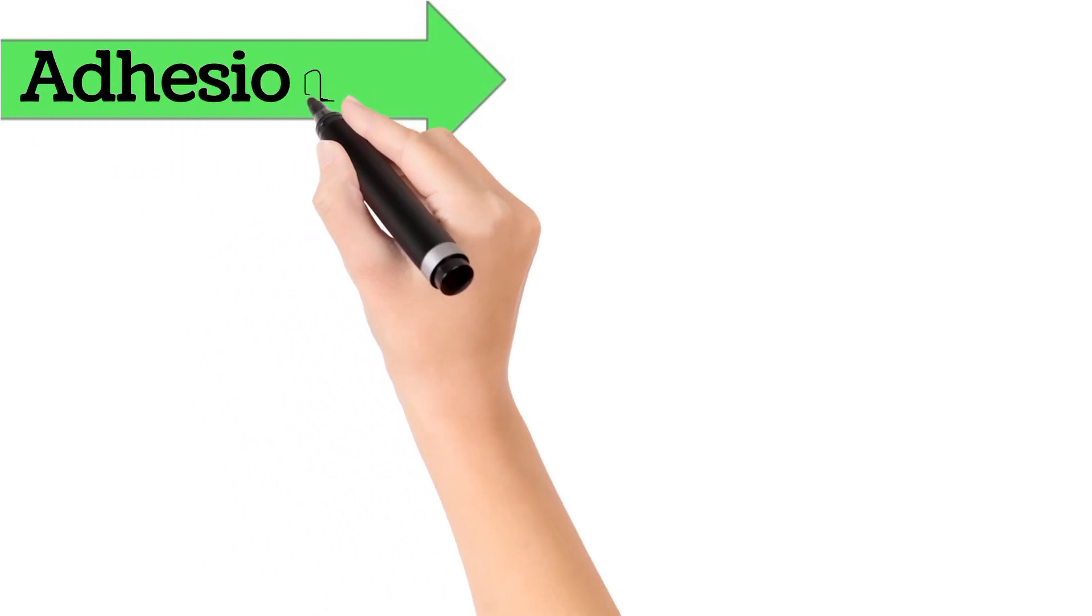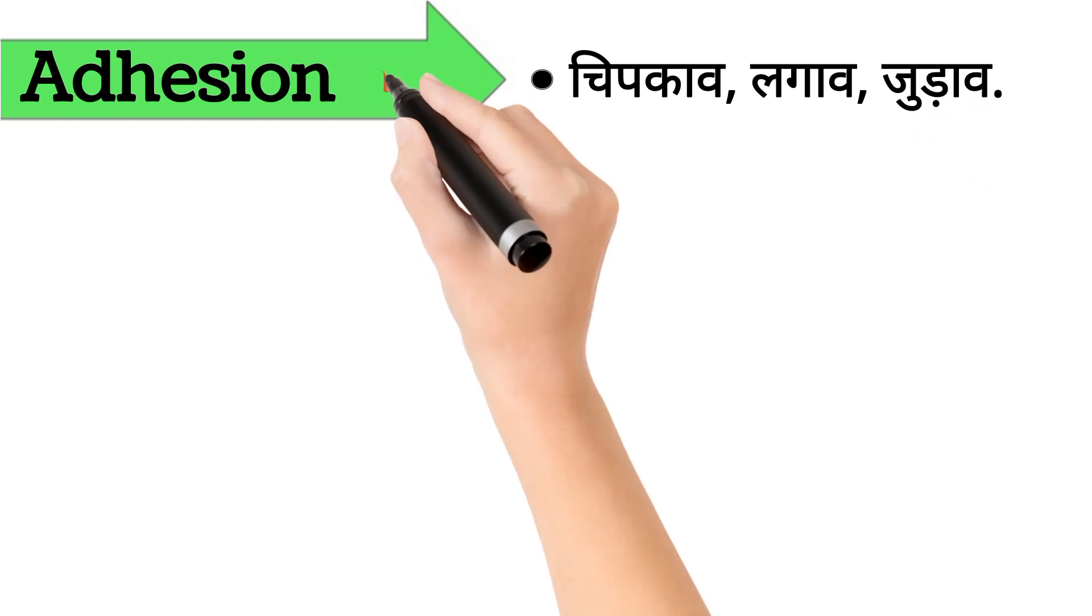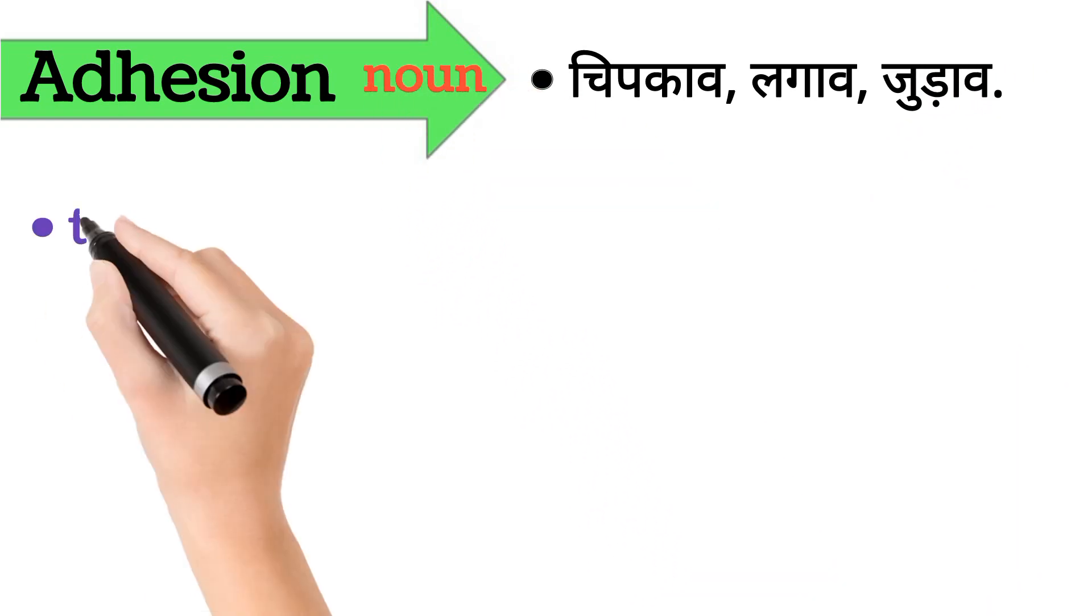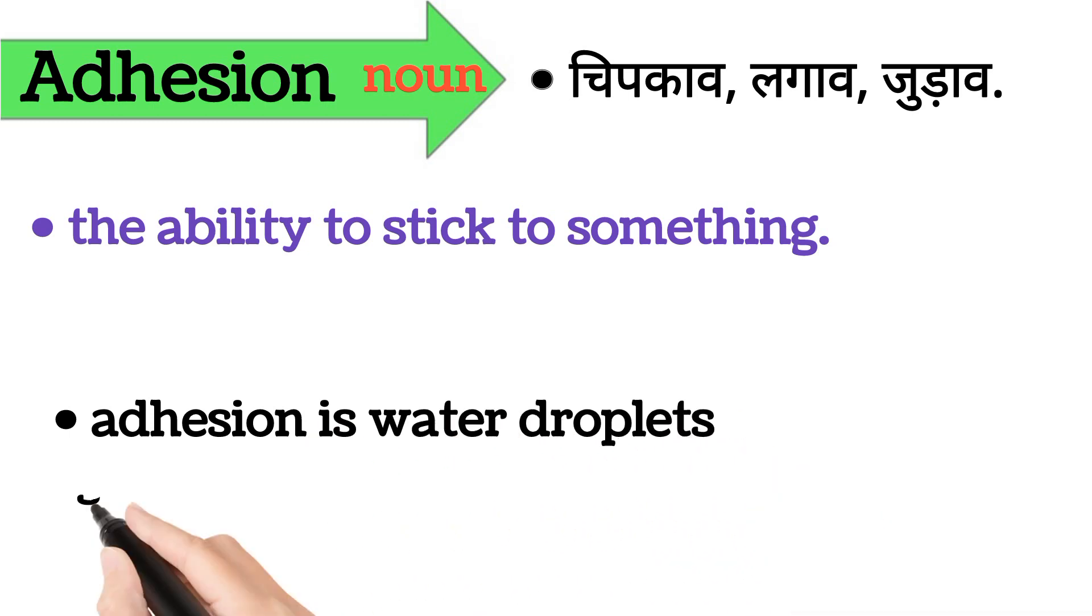Adhesion. Adhesion ka arth hai chipkav, lagav, jurav. Adhesion word noun form mein aata hai. It's also called the ability to stick to something. Iska example hai, adhesion is water droplets sticking to a glass surface.